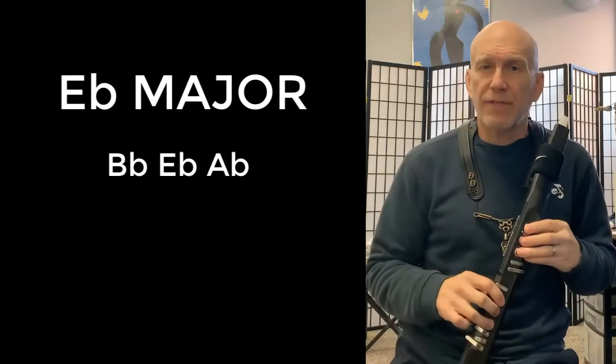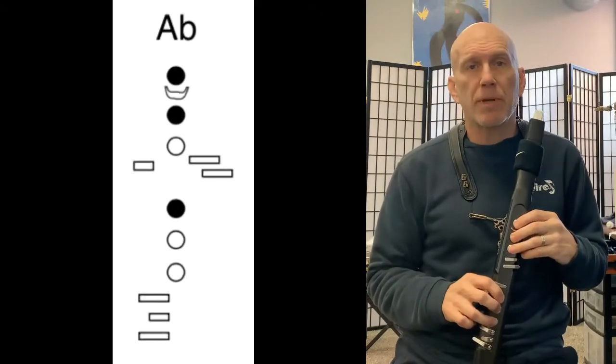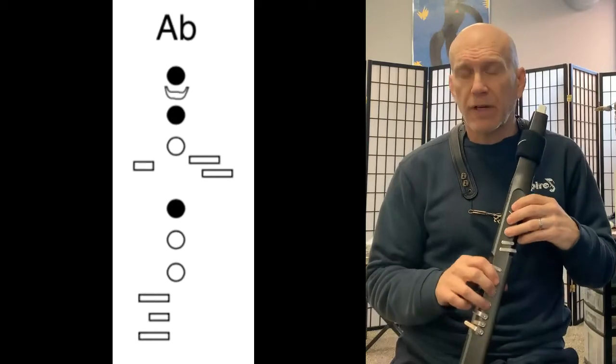So now let's take a look at the E flat scale. The E flat scale will have an A flat in it. It'll have the same sound as G sharp, but we're going to use a different fingering for it.